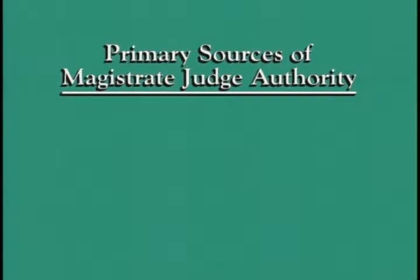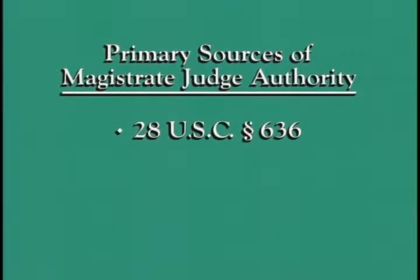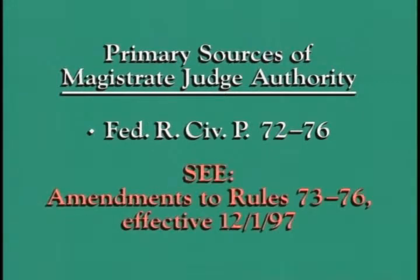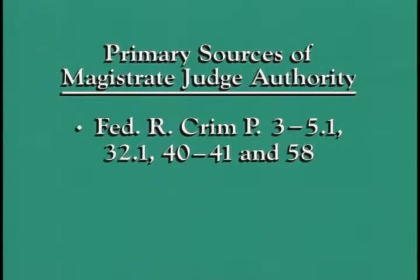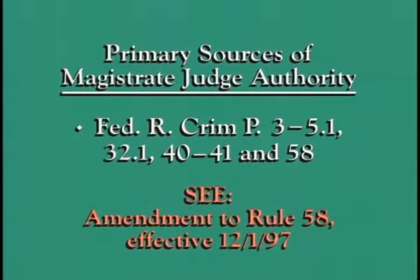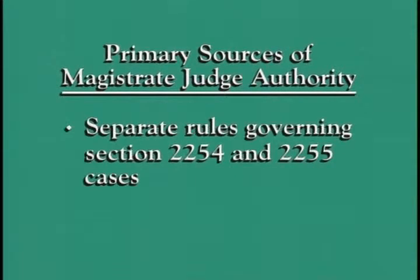I speak, of course, of United States Magistrate Judges. The primary sources of Magistrate Judge authority are 28 United States Code Section 636, Federal Rules of Civil Procedure 72 through 76, Federal Rules of Criminal Procedure 3 through 5.1, 32.1, 40 to 41, and 58, and the separate rules for Section 2254 and 2255 cases. It is convenient for discussion purposes to consider the authority of magistrate judges in two categories: civil and criminal.